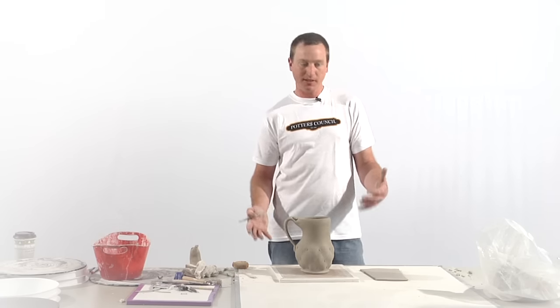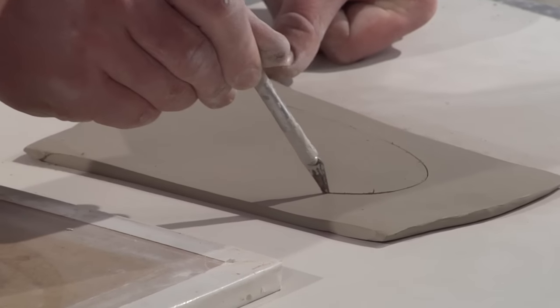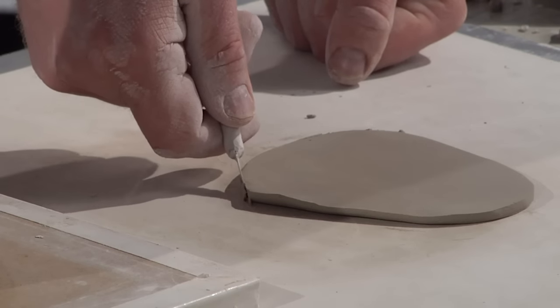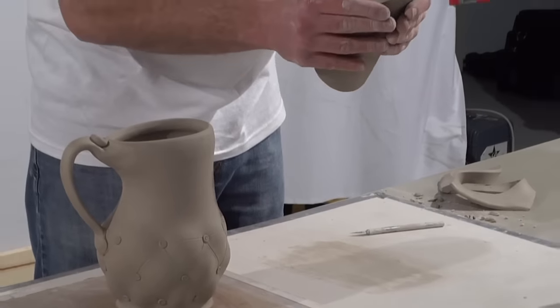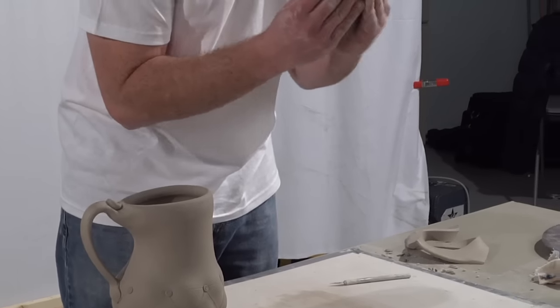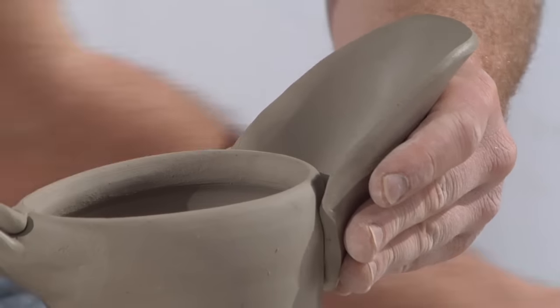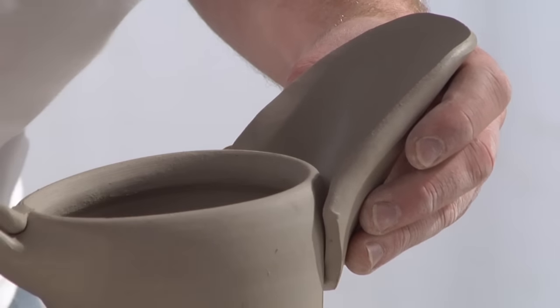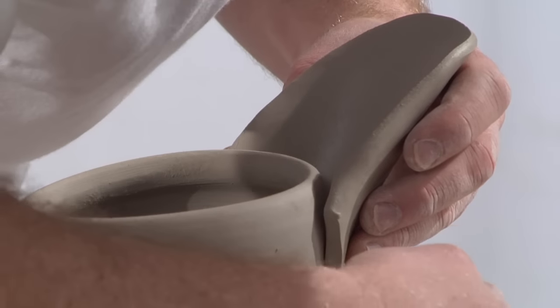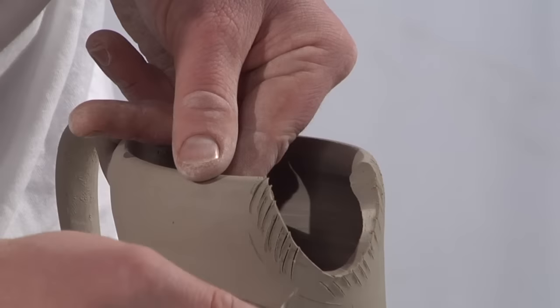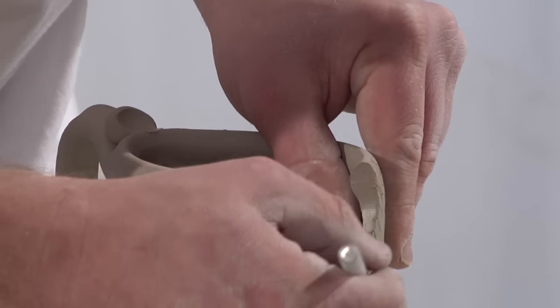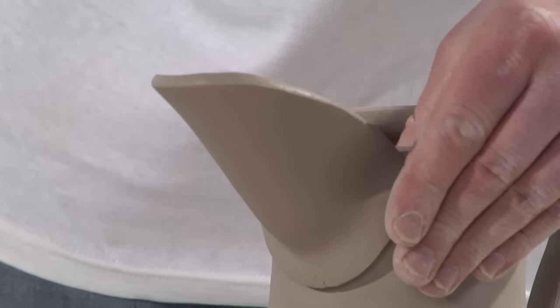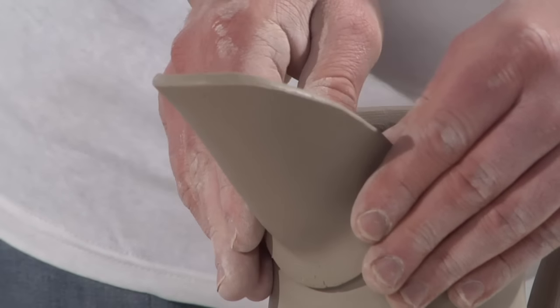So the last part of this is to add the spout to the piece. I've laid out a slab here. I'm going to go ahead and hold the spout in place and trace where the connection will be. It's a very subtle sound but I'm actually hearing the slip squish out between the two pieces.